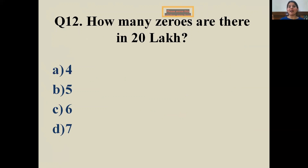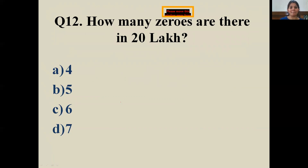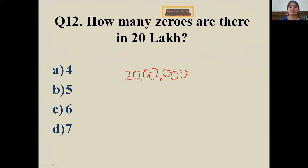Last question: how many zeros are there in 20 lakh? Hint — you know 20, and lakh has five zeros. So 20 lakh is written as 20 followed by five zeros, giving us 20,00,000. Count the zeros — there are six zeros. Wonderful kids!